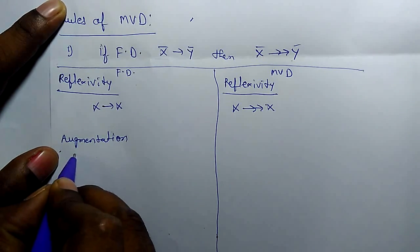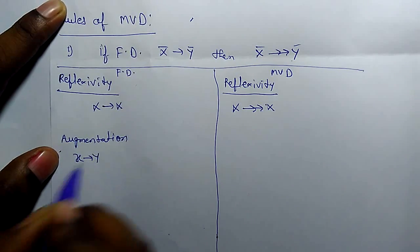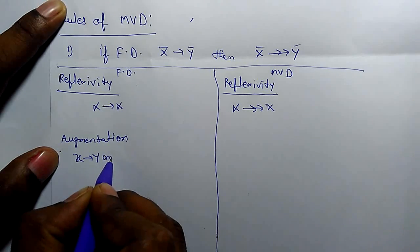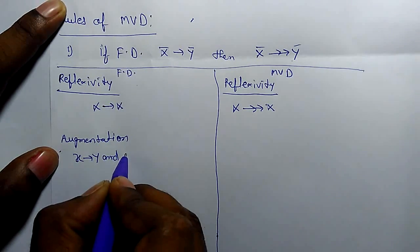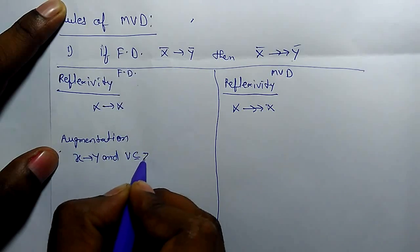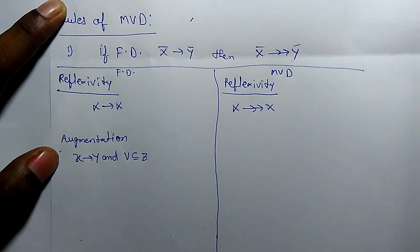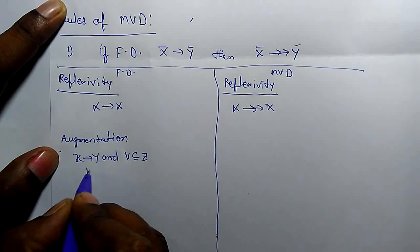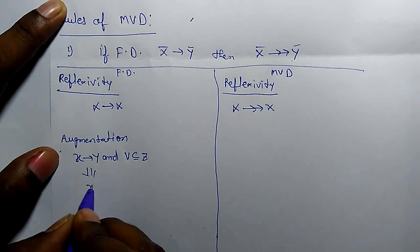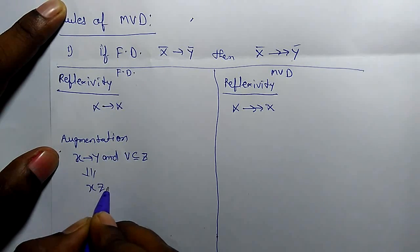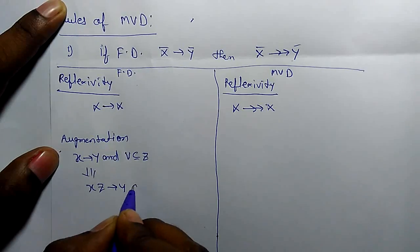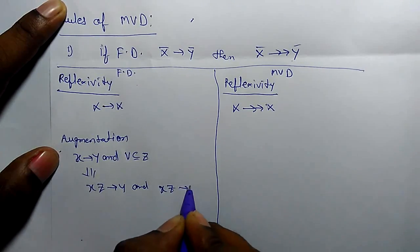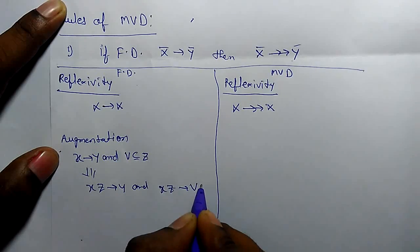In the augmentation rule for functional dependency, if X functionally determines Y and V is a subset of Z, then X functionally determines V of Y.